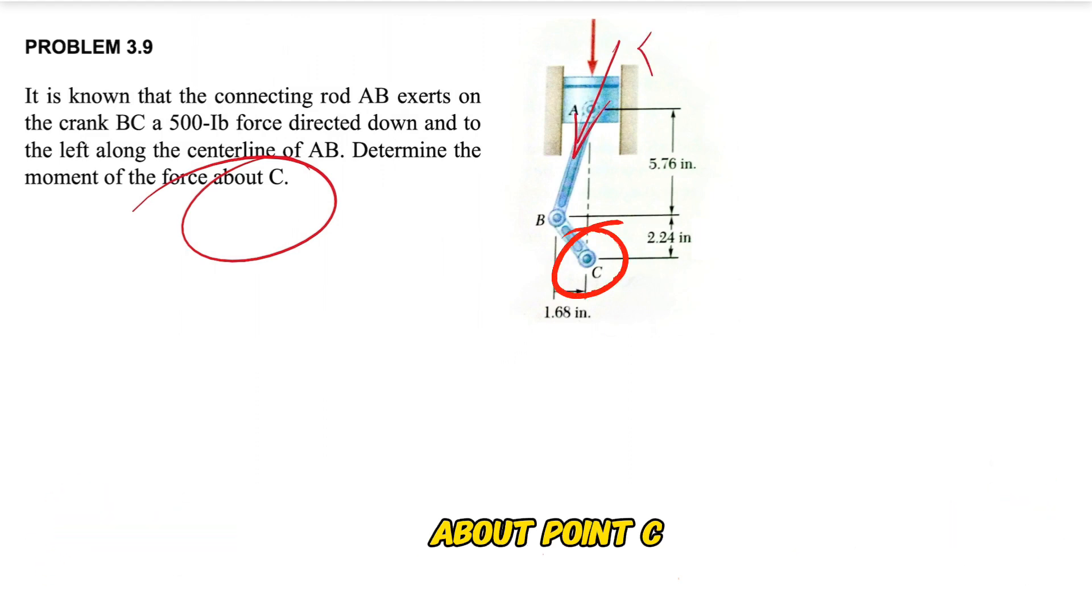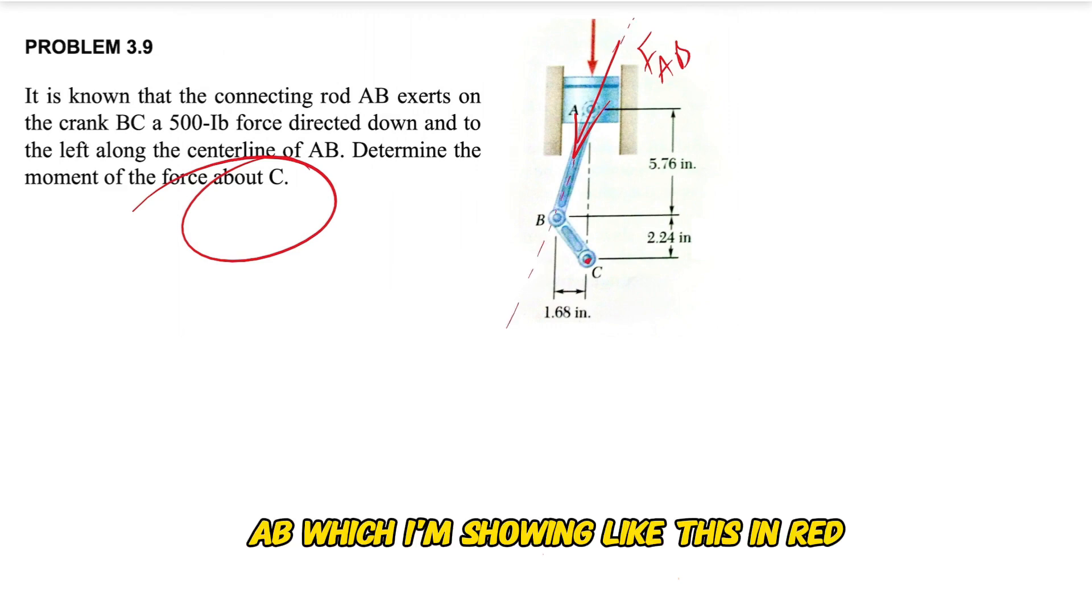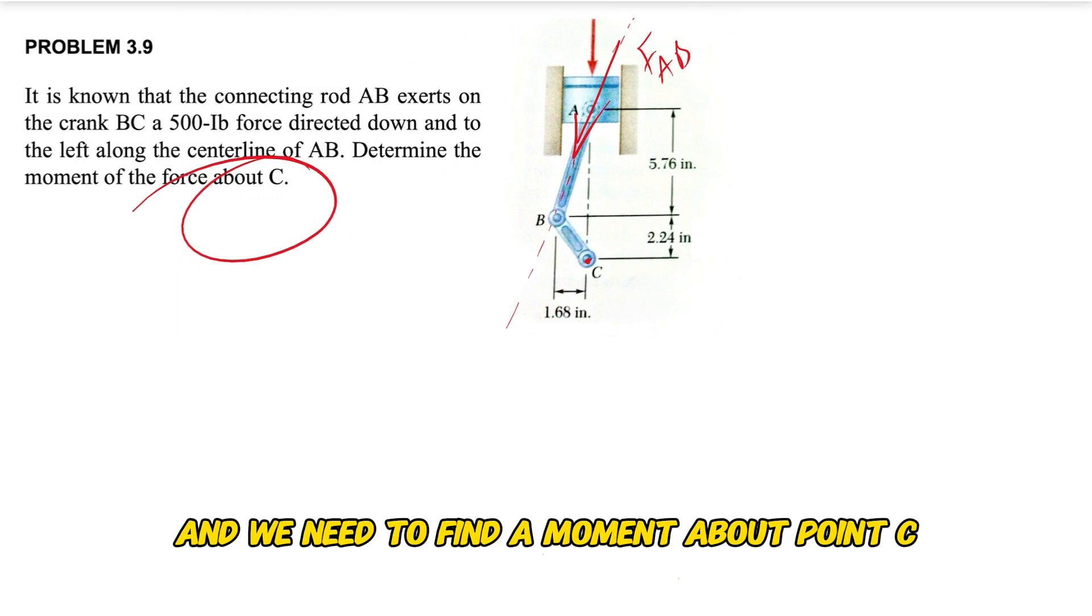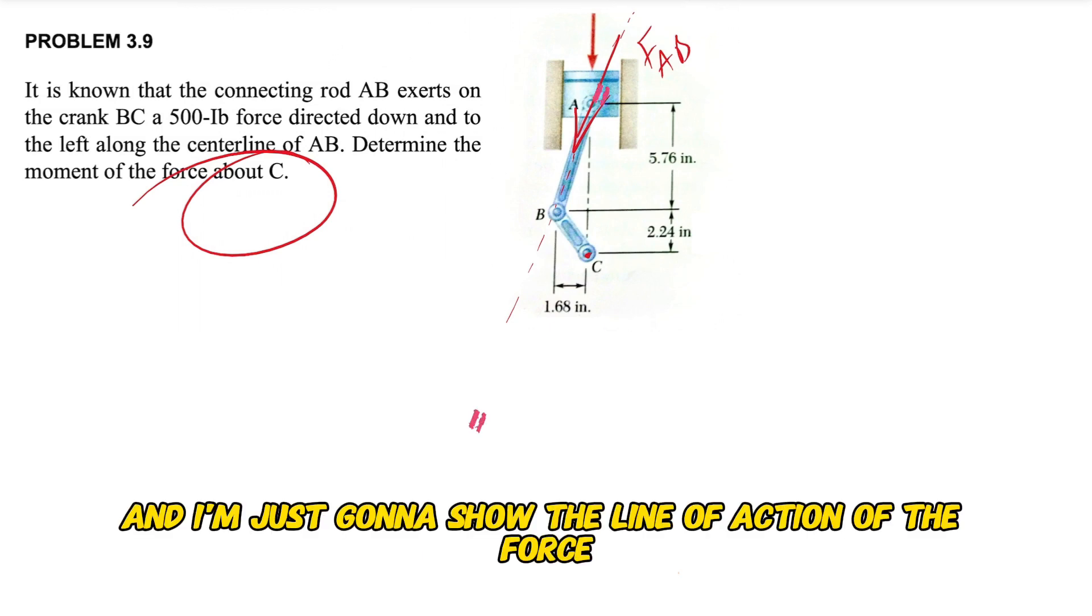So from the question we know that we have a force FAB, which I'm showing like this in red, and we need to find the moment about point C. I'm just going to show the line of action of the force.